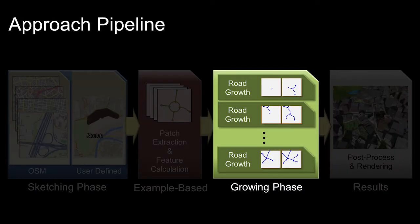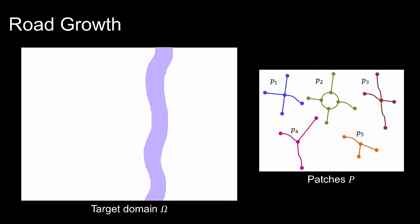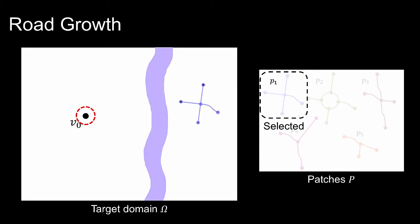The road growth starts from the user-specified destination seed. First, a patch p1 closest to the user-specified source point in the example is used to initiate road growth. The new vertices v1, v2, v3, and v4 are enqueued.